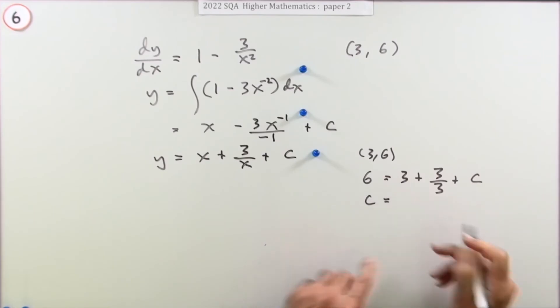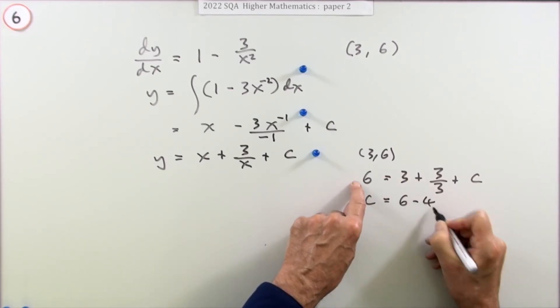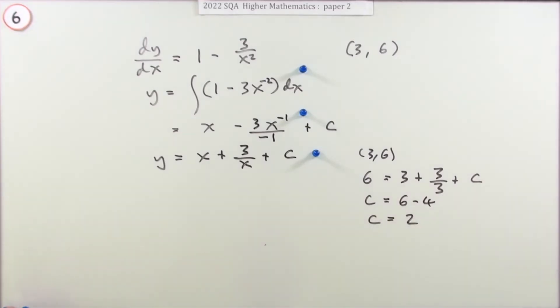So that means that c is going to be, well, that's just 3 plus 1 is 4. I'll put the working down. 6 minus 4, so c is 2.